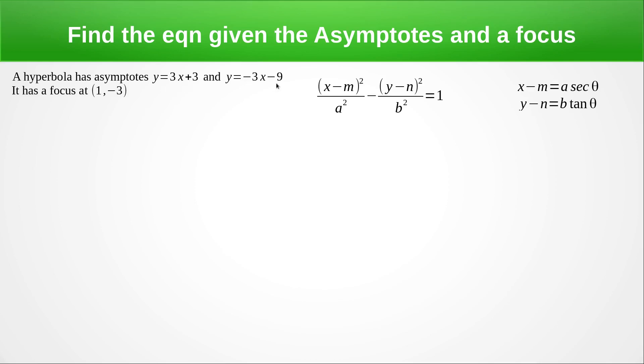And the centre is where the asymptotes cross. So you just let 3x plus 3 equal minus 3x minus 9. And you solve that to get the x value, substituting to get the y value. So you get the centre at minus 2, minus 3.